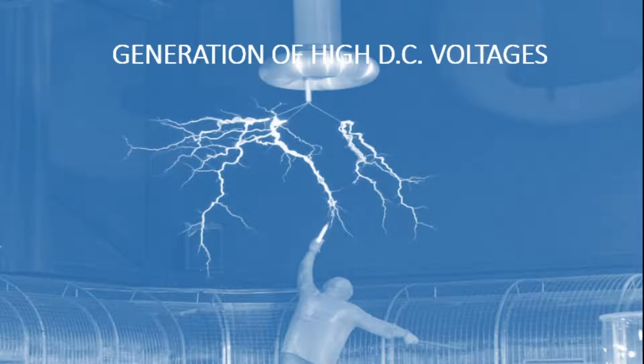Let's discuss step by step. First: generation of high DC voltages. Generation of high DC voltages is required in research work in the areas of pure and applied physics. Sometimes high DC voltages are needed in installation testing of cables and capacitors. Impulse generator charging units also require high DC voltages of around 100 to 200 kV.